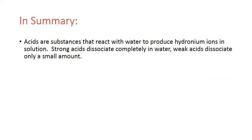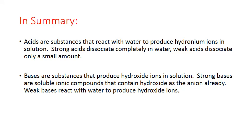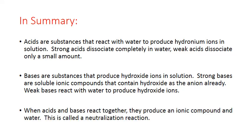In summary, acids are substances that react with water to produce hydronium ions in solution. Strong acids dissociate completely in water, while weak acids dissociate only a small amount. Bases are substances that produce hydroxide ions in solution. Strong bases are soluble ionic compounds that contain hydroxide as the anion already. Weak bases react with water to produce hydroxide ions. When acids and bases react together, they produce an ionic compound and water — this is called a neutralization reaction.